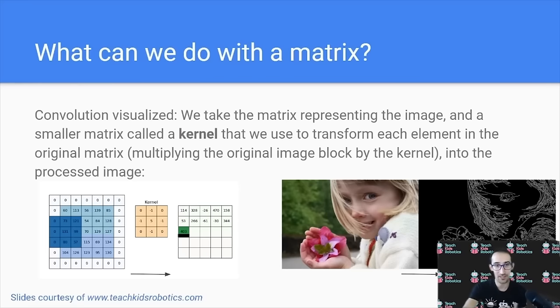This submatrix is known as a kernel, and different kernels allow us to perform different operations on the image, such as performing image blurring, or border detection, or sharpening.